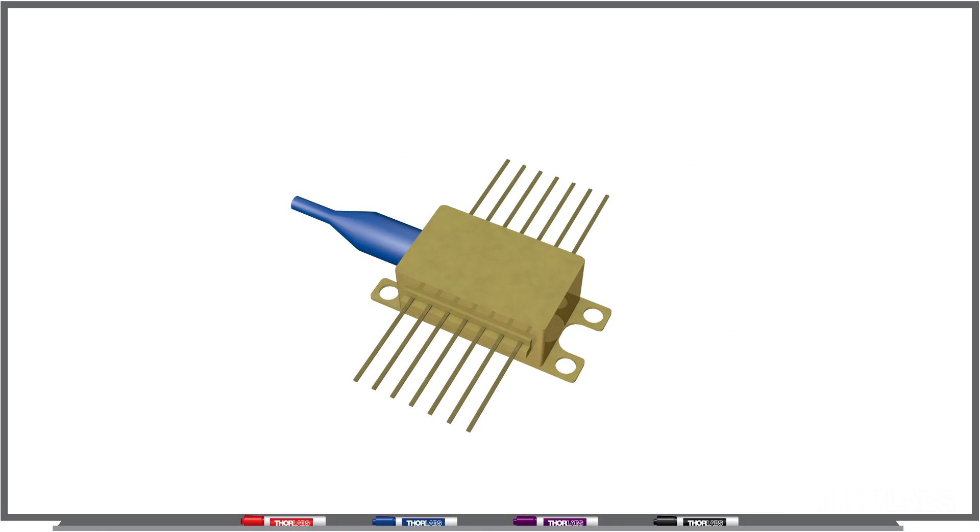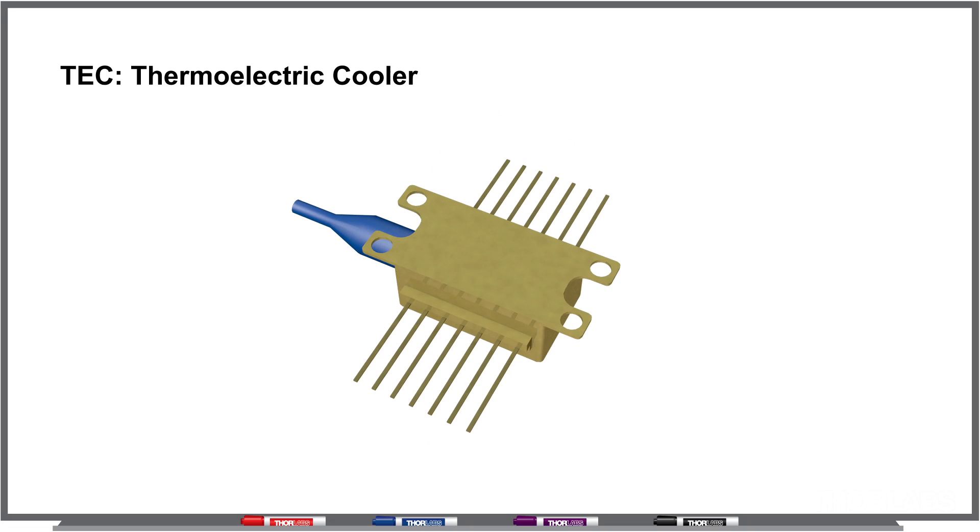Inside of your butterfly is a TEC and that helps control the temperature of your laser chip. But because the butterfly package is very compact, there's really nowhere for the heat to transfer away from the butterfly package. So we rely on the metal on the inside of the mount to act as a heat sink.